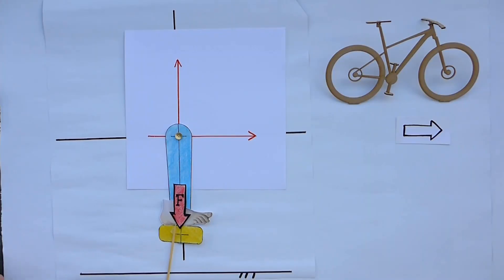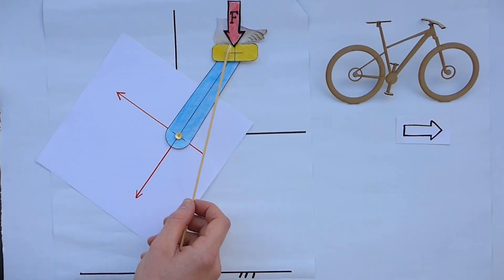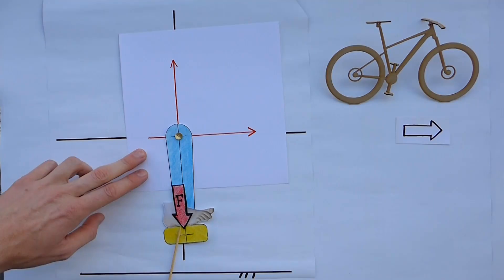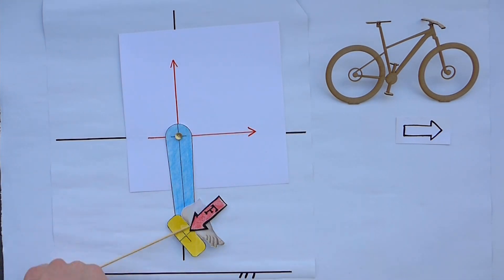While pedaling, you are exerting a force that is always pointing to the ground. Just as the pedal platform, this force turns counterclockwise relative to the crank arm.